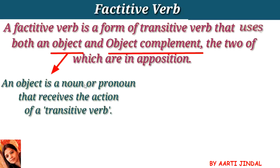An object is a noun or pronoun that receives the action of a transitive verb. Object noun ya pronoun hota hai jo transitive verb ke action ko receive karta hai. Means verb ke action ka effect jis word par padta hai, jis noun ya pronoun par padta hai, us word ko hum object kehte hain.